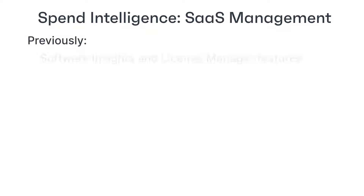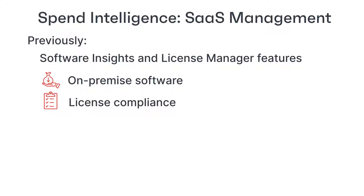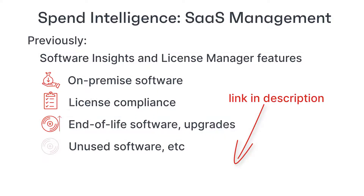In previous videos we looked at how the software insights and license manager features of Ivanti Neurons for Spend Intelligence help you to manage the spend on your on-premise software — how to determine where you have too few or too many licenses, how to identify end-of-life software, upgrade opportunities, and where you are wasting money on unused software and so on. I'll put a link to the playlist that contains those videos in the description.